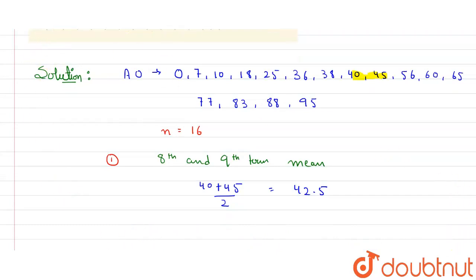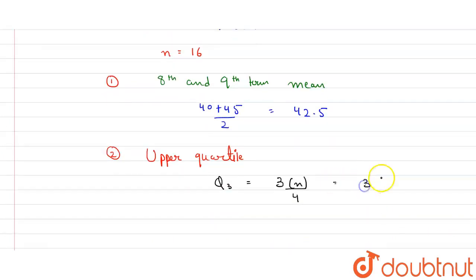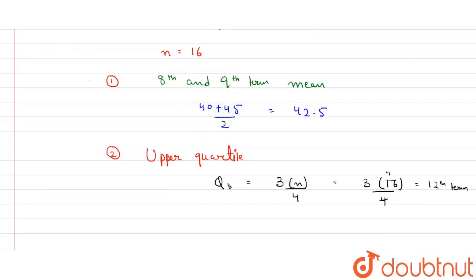Now what we need to find here: upper quartile. We know the formula for upper quartile, Q3, is given by 3n/4. This is the formula. So let's put the value here: 3 times 16 divided by 4, it will be 12th value or 12th term. So what is 12th term here? Look in the series: 9, 10, 11, 12th is 65. So value of Q3 or upper quartile is 65.